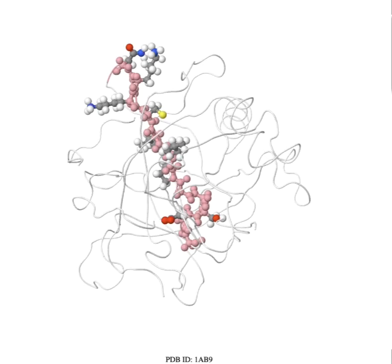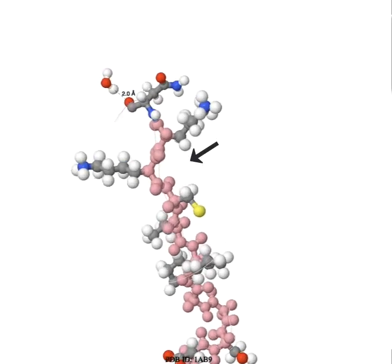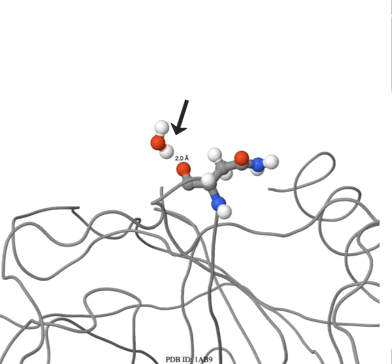Asparagine 204 contains a backbone carbonyl group that can accept a hydrogen from a solvent water molecule at the protein's surface.